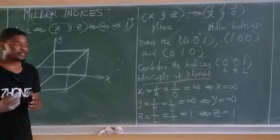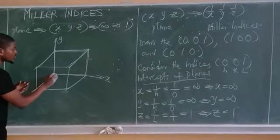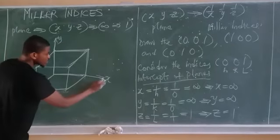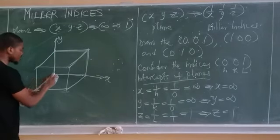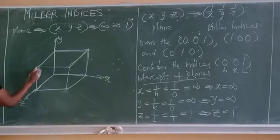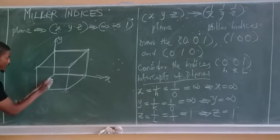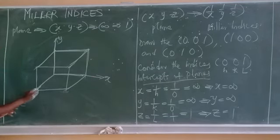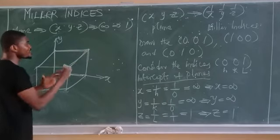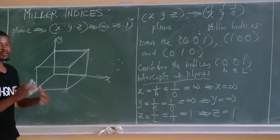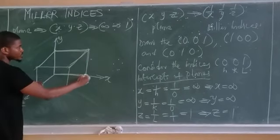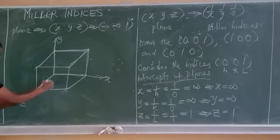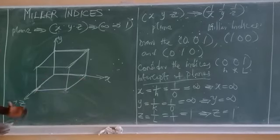Moving up from the origin is positive y, moving right is positive x, and moving forward is positive z. You can also call any other node of the cube as your origin — every node in a three-dimensional structure automatically becomes an origin. Moving backwards or downwards from any chosen origin gives negative directions.